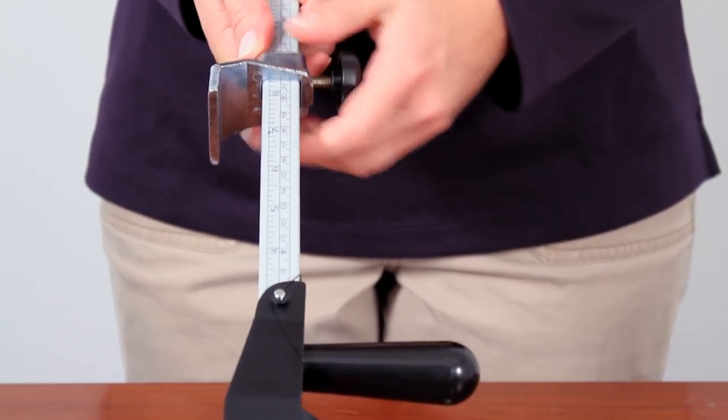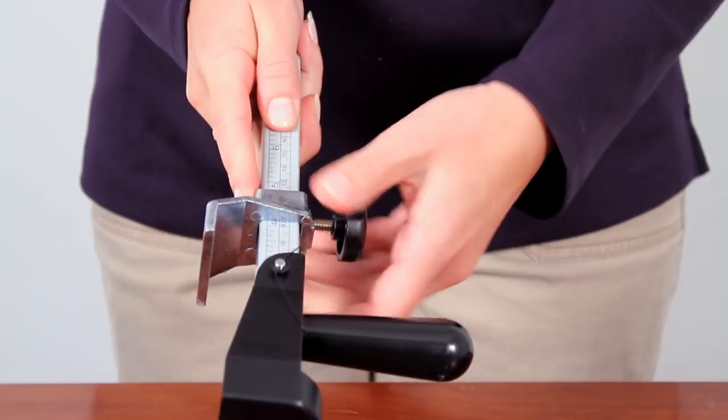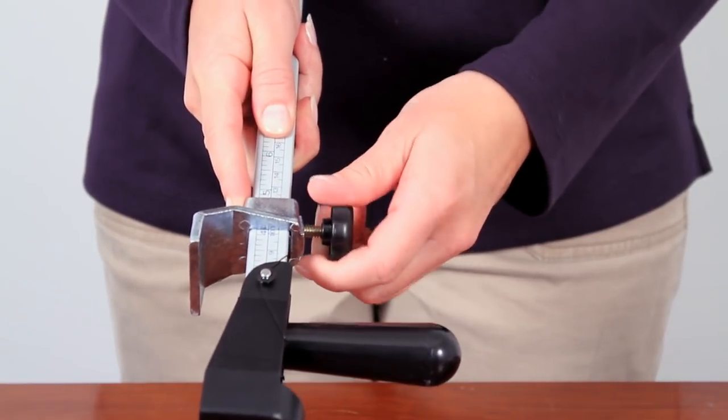Using the markings on the side of the tool, set the guide depth to match the amount of carton height you wish to resize. For this example, we will use a 4 inch depth.